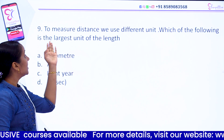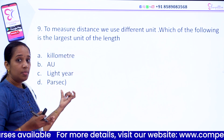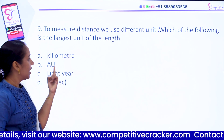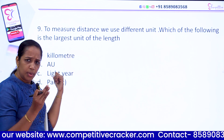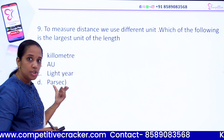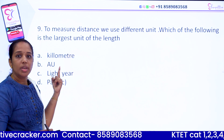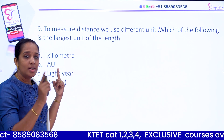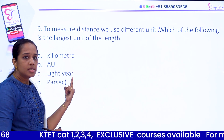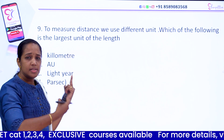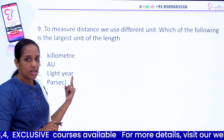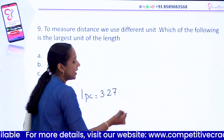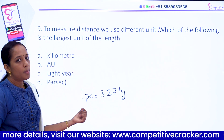Question number 9. To measure distance we use different units. Which of the following is the largest unit of length — kilometre, astronomical unit, light year, or parsec? Parsec is the biggest unit among these. One astronomical unit (AU) is the average distance from Earth to the Sun. A light year is the distance light travels in one year. But parsec is the larger unit.